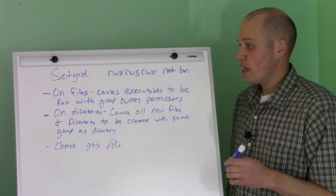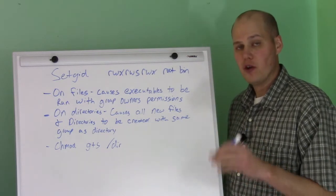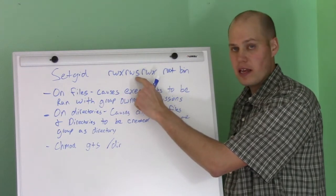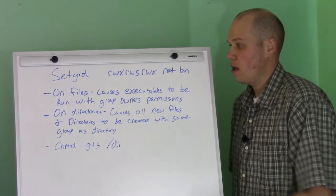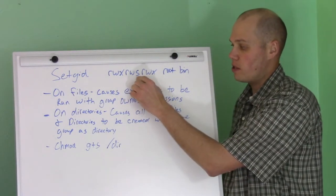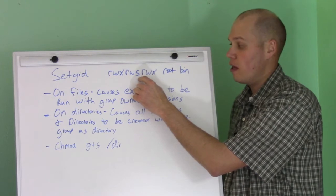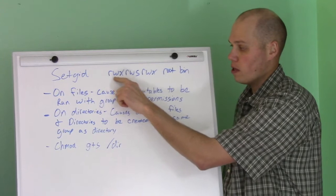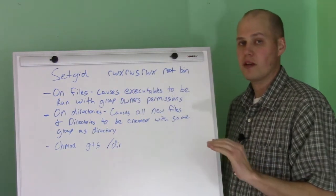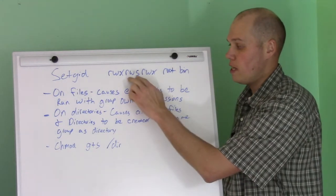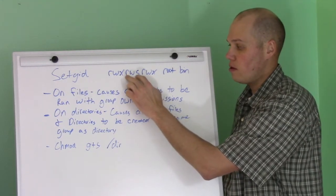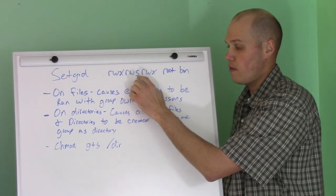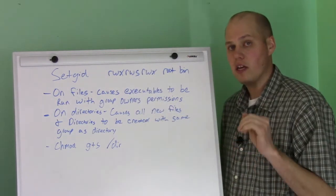The first thing I want to cover is how you know if you have this set. If you do an ls -l and you see a file or directory that has an S in the group portion of the permissions instead of an X, that means you have the set GID bit set on that file or directory. Note: if you see an S in the owner portion, that's the set UID, which is something totally different that we'll cover another day. So if you see an S in the middle group permission part instead of an X, you have the set GID bit set.